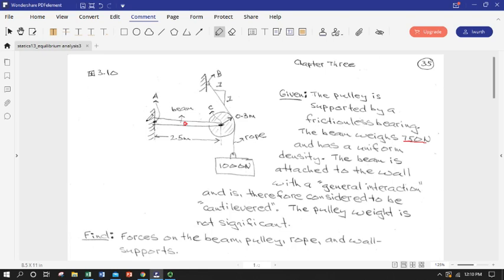So when something is sticking out from a surface with a general interaction, another way of describing this is the term cantilever, so it's completely fixed and can resist moment.